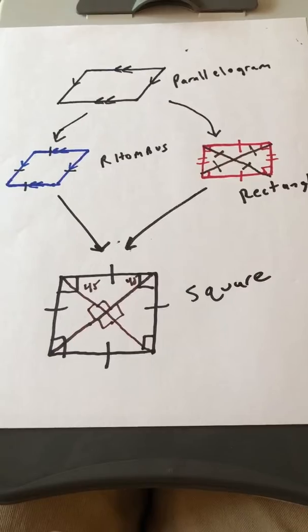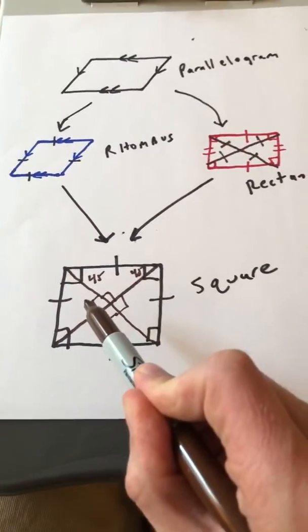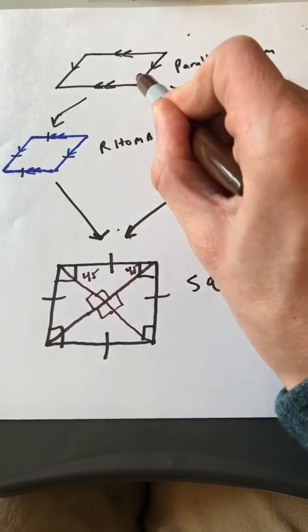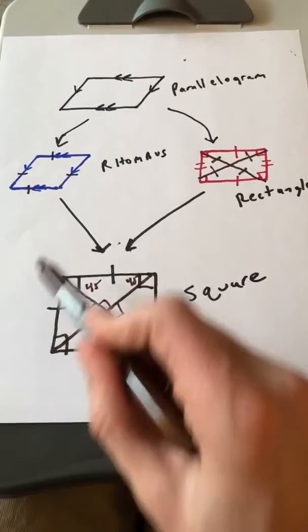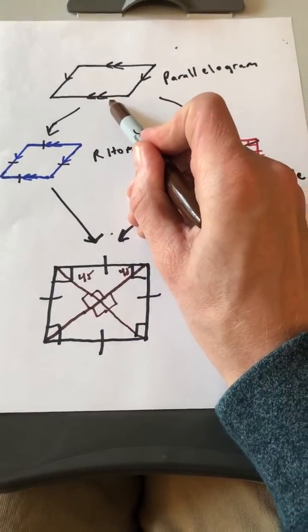Okay? Now, when we talk about these quadrilaterals, if the quadrilateral is a square, then it's also everything above it. So it's also a rectangle, it's also a rhombus, it's also a parallelogram. If the quadrilateral is a rhombus, then it's also everything above it. So it's also a parallelogram. Right?